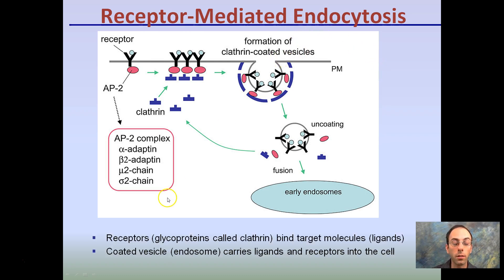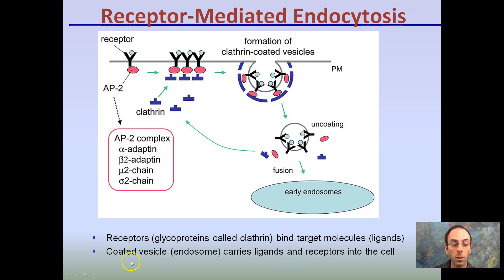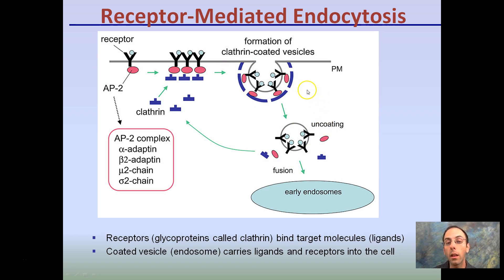Receptor-mediated endocytosis is the most efficient form. Receptors on the exterior surface of the cell membrane bind to specific target molecules. Vesicles carry ligands and receptors into the cell. A receptor binds only to one very specific thing — it doesn't matter what else is around the cell, that's what it's binding to and collecting. This is important because it's the cell's way of binding and collecting only one specific substance rather than randomly grabbing things.